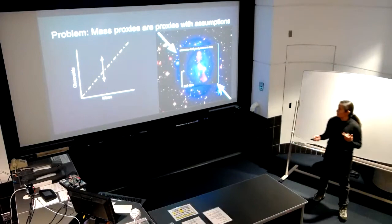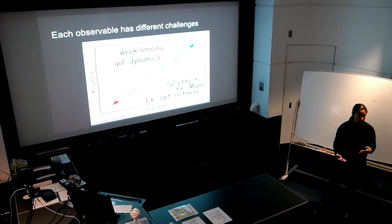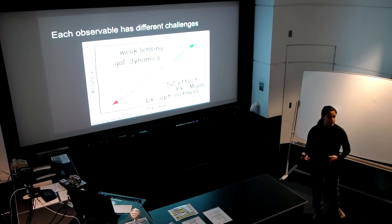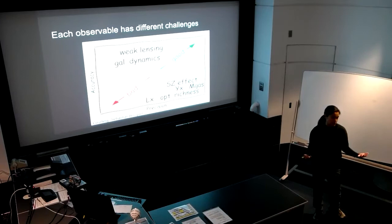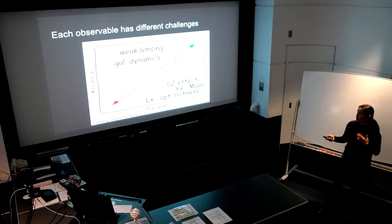Back to the issue that mass proxies are proxies with assumptions. So tying observables in with mass is not going to always work out the way you want it to. So the observable I just talked through in the past few slides is for the X-ray, where the bias that was illustrated is called the hydrostatic mass bias.